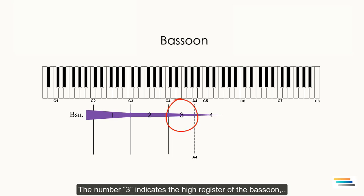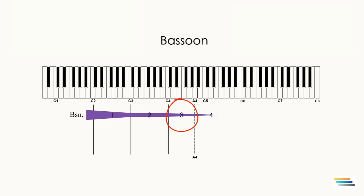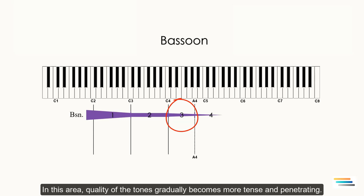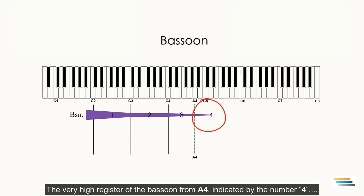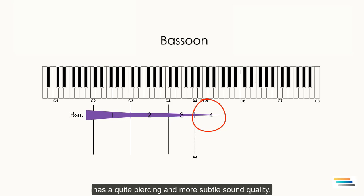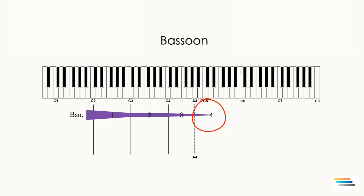The number three indicates the high register of the bassoon which is around C4 to A4. In this area quality of the tones gradually becomes more tense and penetrating. That's why I show it as a sharp arrow. These tones are thin and nasal. The very high register of the bassoon from A4, indicated by the number 4, has a quite piercing and subtle sound quality. Depending on the instrument and the player skills, the top note of this instrument is indefinite.